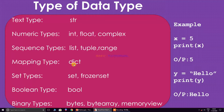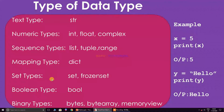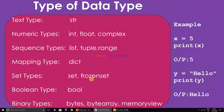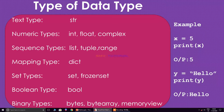In the previous two videos I taught mapping type. In this final video I am teaching the set data type. The set data type has two types: one is set and the next one is frozen set. The set data type is a collection of items, but it is unordered and does not support indexing. It does not allow duplicate values.